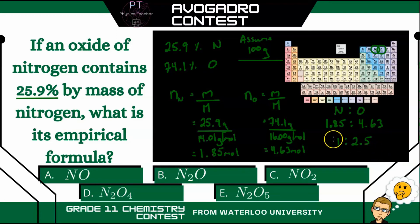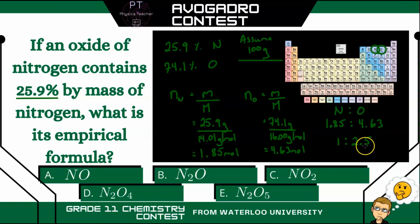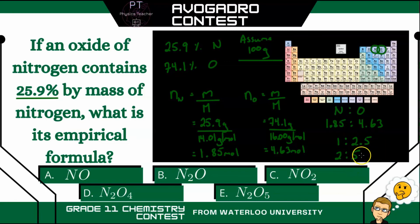Our first number is a nice integer, but the second one is not. But if we simply multiply both sides by 2, we get 2 and 5, which are both nice integers. This means our empirical formula is N₂O₅ — 2 nitrogens and 5 oxygens. Our answer is E.